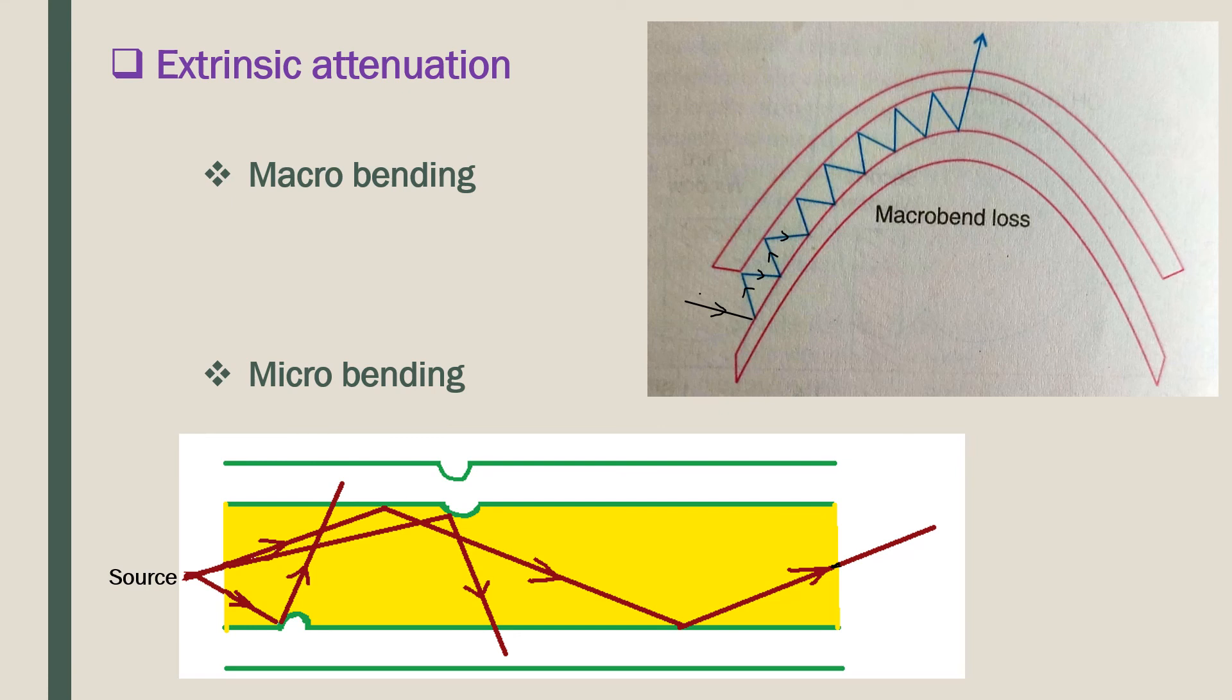Micro bend is a small scale distortion. It is localized and generally indicative of pressure on the fiber. Micro bending is caused by imperfection in the cylindrical geometry of the fiber during the manufacturing process or installation process. Light ray gets scattered at these small bends and escape into the cladding. Such losses are known as micro bend losses.